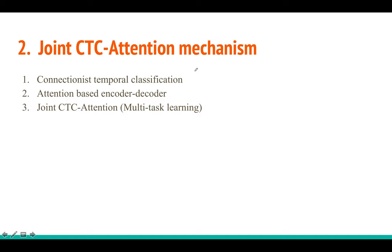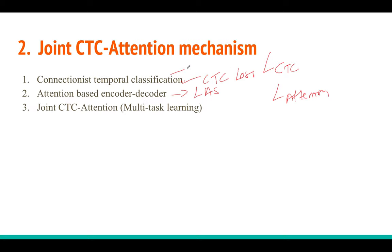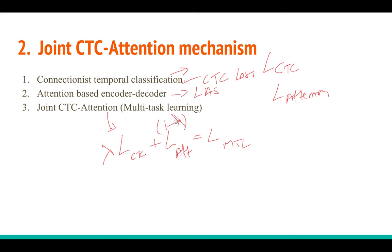We will explain the main contribution of this paper in three sections. First, we introduce CTC loss for speech recognition; second, we see the attention encoder-decoder method which is the Listen, Attend and Spell model. We will explain L_CTC and L_attention — those two loss equations. The main contribution is this multi-task learning where you combine the CTC loss with the attention loss into a final MTL loss. These two losses are not added directly; they are scaled by a hyperparameter called lambda, which can be tuned. This is the whole idea.